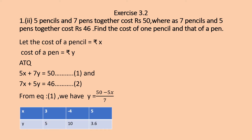Substituting values of x in y = (50 − 5x) / 7: when x = 3, y = (50 − 15)/7 = 35/7 = 5, giving solution (3, 5). When x = −4, y = 10. When x = 5, y = 25/7 ≈ 3.57. You can substitute any values of x to get the value of y.